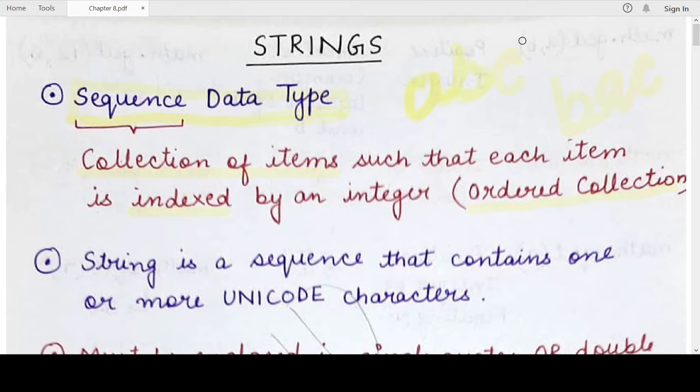We will study about indexing in the next video in detail. But as of now you must remember that string is a collection of values - that's why it is a sequence data type. It is an ordered sequence data type in which each item will have a unique integral position, which is also called the index of that item.